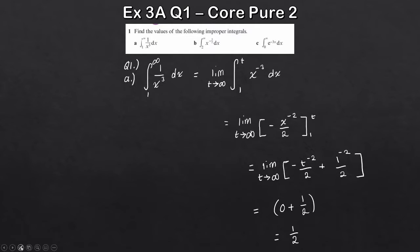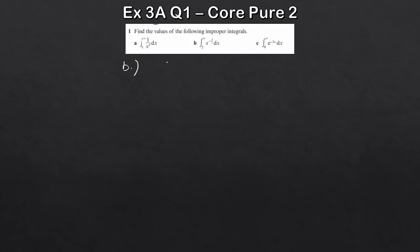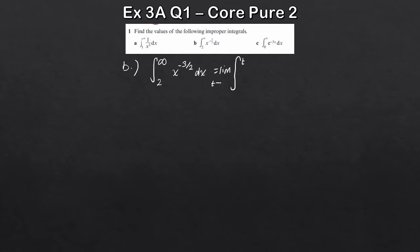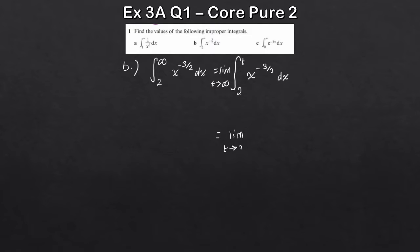Let's have a go at part B — a very similar integral. Again, we've got infinity on the upper limit, and it's x to the minus 3 over 2. Exact same process: change the upper limit to t and take the limit as t tends to infinity. We perform the integral of x to the minus 3 over 2 dx — add 1 to the power to get minus 1 over 2, then divide by minus 1 over 2.